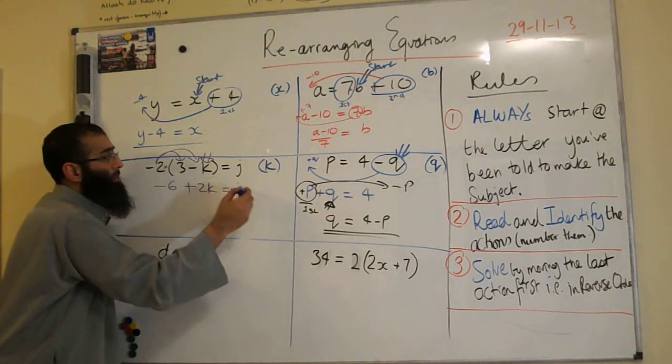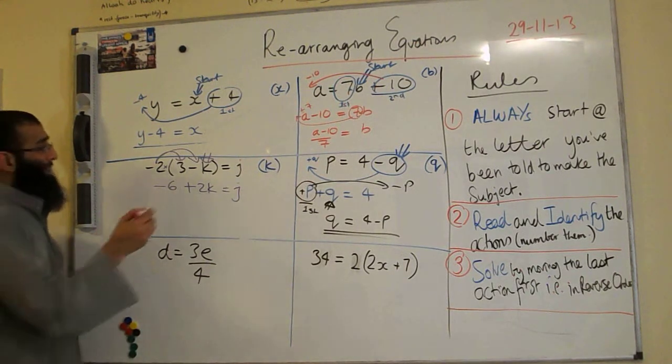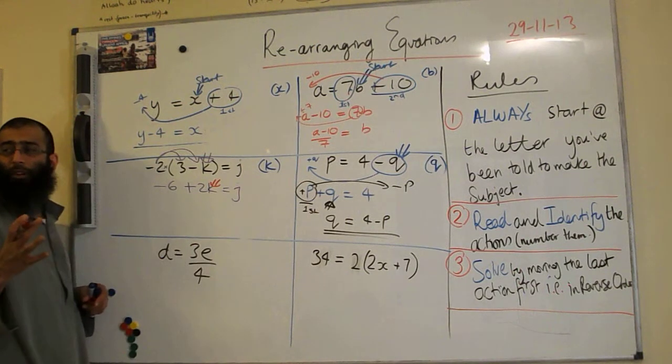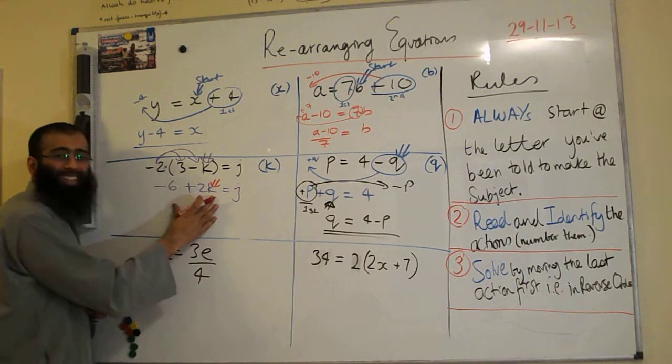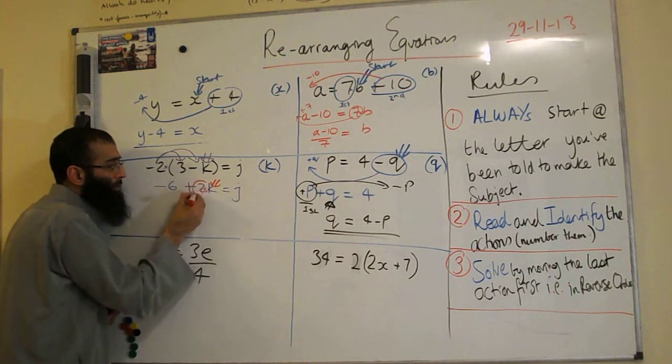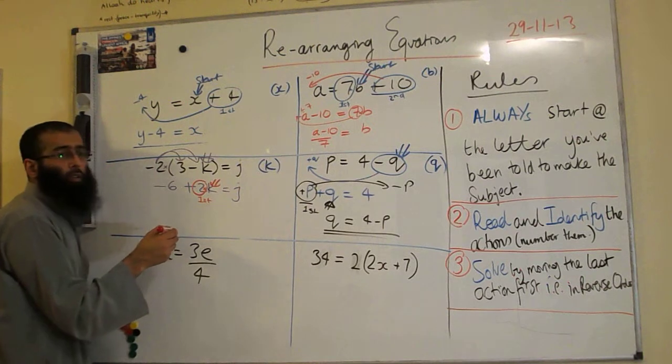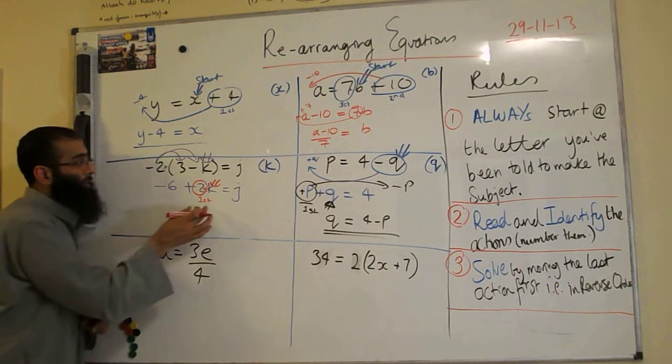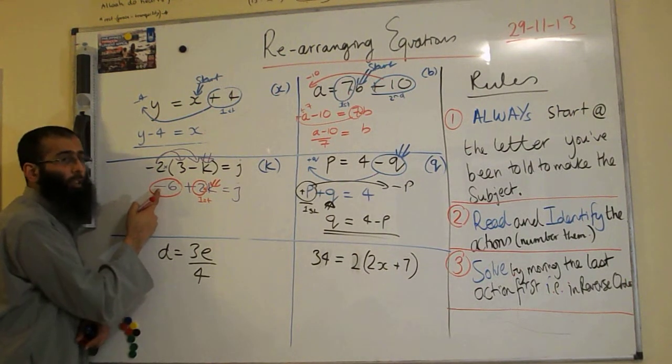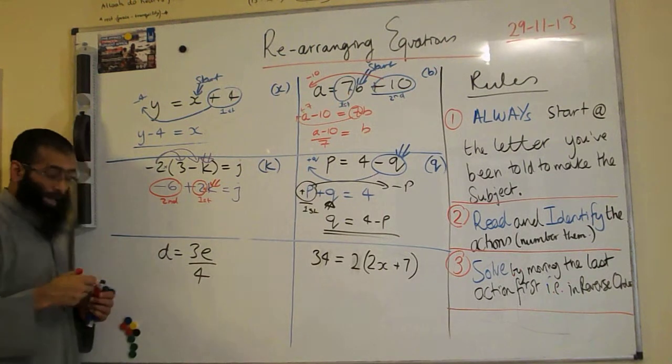Is equal to J. Now watch what happens. We have to make K the subject. So let's now identify the actions. Start at K. Umar, what's been done to the K first? Time by 2. So this is called the first action. Ramiz, what's been done next? After it's been timed by 2, it's been minus by 6. That's going to be our second action.